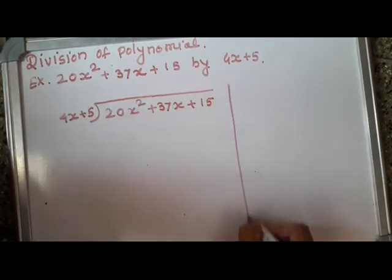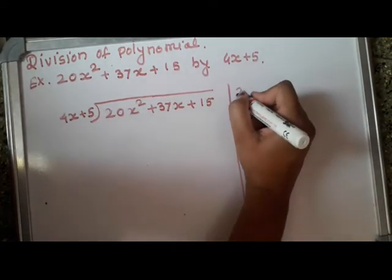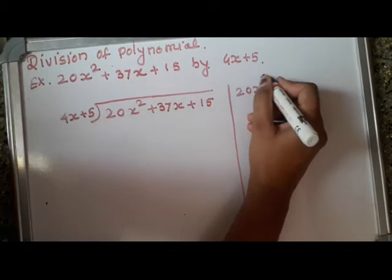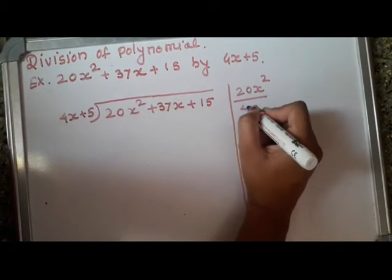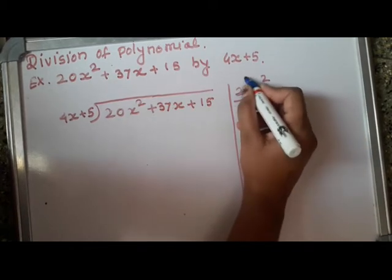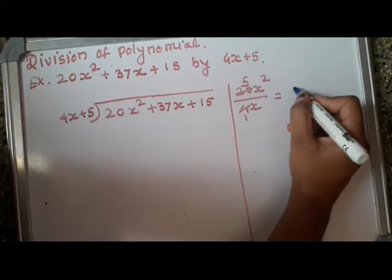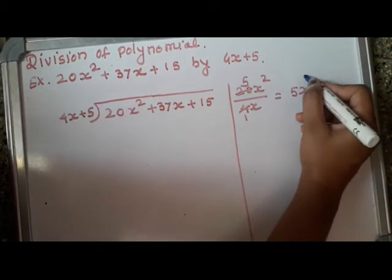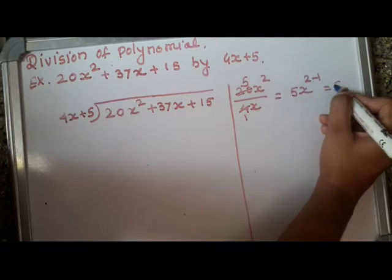See the method. First I will divide 20x square by 4x. It will become 4 ones are 4, 4 fives are 20, 5x raise to 2 minus 1 that is 5x.